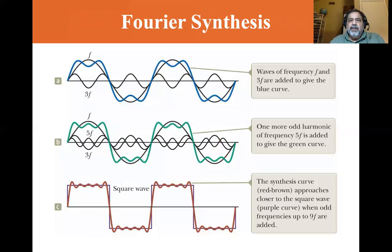And so let's look here, the Fourier synthesis. Waves of frequency f and 3f are added to give the blue curve. And you can see that the blue curve here is beginning to look a little bit like a square wave. And we're going to learn that a square wave is nothing but the odd harmonics. Now, one more odd harmonic is added, a frequency 5f. And you can see that it's even more of a square wave, and then this red-brown one approaches closer to the square wave when odd frequencies up to 9f are added.